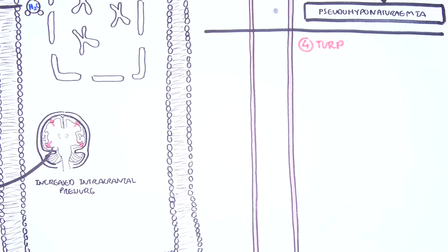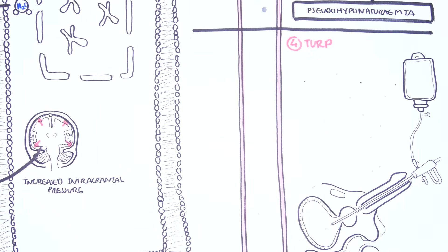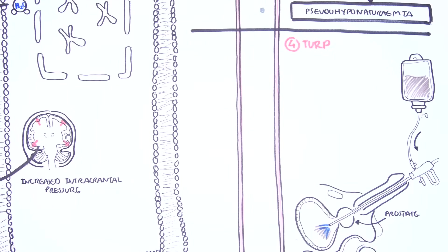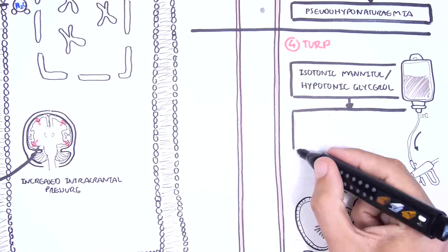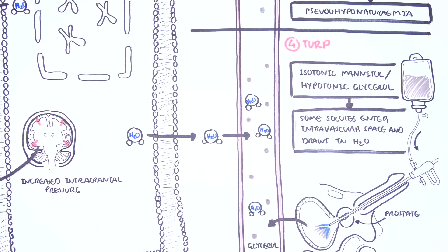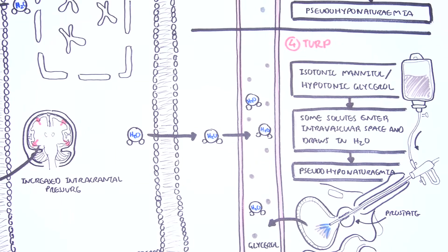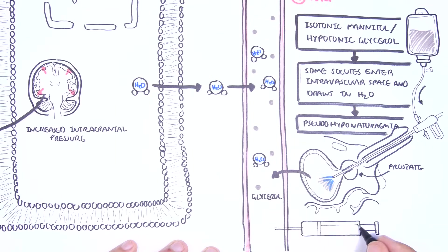TURP — also known as transurethral resection of the prostate — can cause pseudohyponatremia. This is because large volumes of mannitol or glycine are used for bladder irrigation and can be absorbed by the body. As mannitol and glycine enter the intravascular space, they draw water from other compartments, resulting in dilutional hyponatremia. The serum osmolality is also normal in this case.